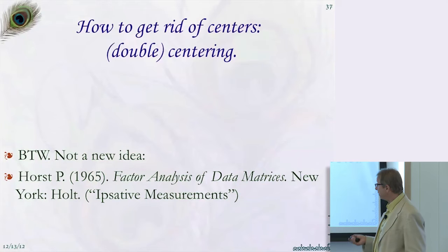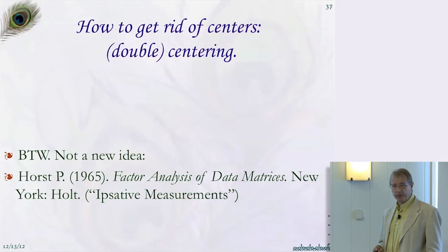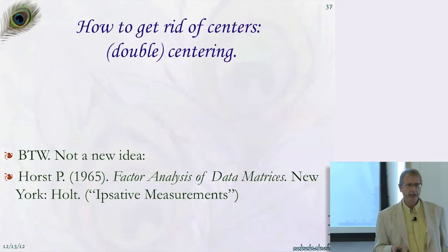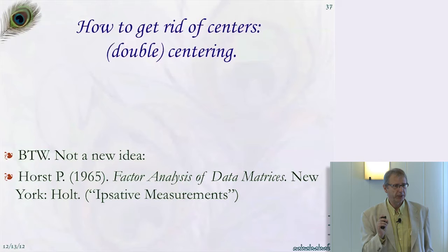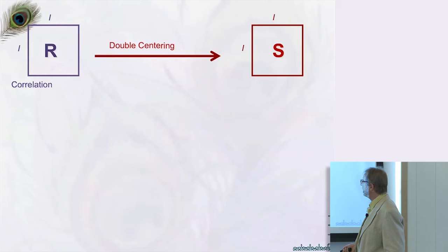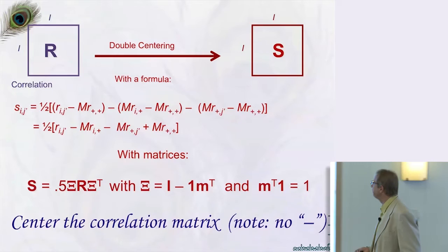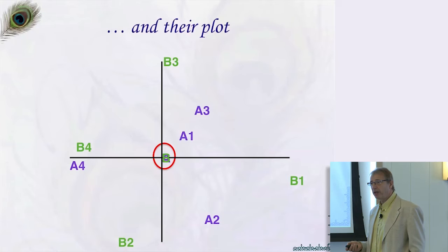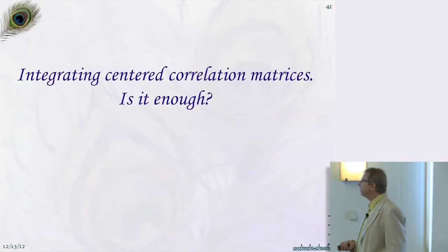To get rid of the different centers, we do double centering. This is not a new idea — the first to mention it was Hors, in a book on factor analysis of data matrices. He called it ipsative measurement — an obscure word meaning the information in a matrix depends on its own center, so it's only relative to that matrix. After double centering two matrices and plotting, you can see that A4 and B4 are really talking about the same thing, and A2 is not too far from B2.